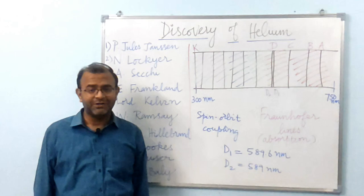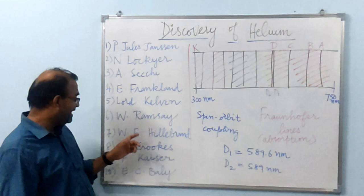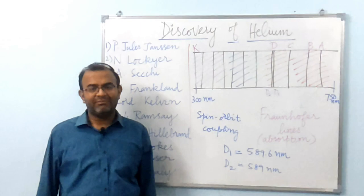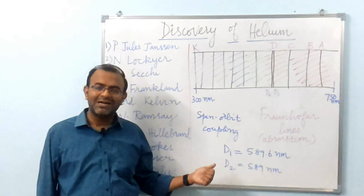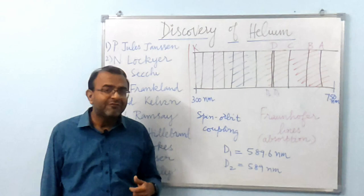This was exactly what Lockyer had thought for several years. He and Edward Franklin had performed several unsuccessful experiments to prove this. They called this line the D3 line because of its connection to the D1 and D2 lines of sodium. Lockyer had suggested that this could be due to another form of hydrogen.